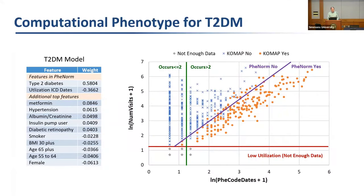Here's another visualization with actual patient dots: the x-axis is the log of the number of dates that fee code appeared, and the y-axis is total visits (utilization). A green vertical line represents the basic 15-year-old approach of requiring more than two occurrences. The PheNorm algorithm draws a purple diagonal line — everything above is not diabetes. The newer COMAP algorithm further refines this: some patients above the line probably do have diabetes due to additional evidence, while some below may actually have type 1 diabetes.